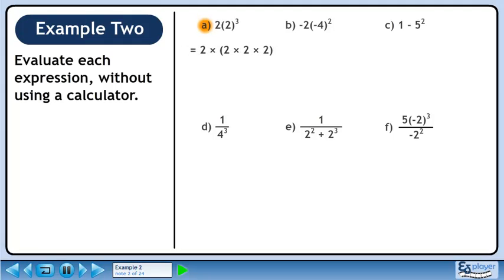Expand 2 cubed to get 2 times 2 times 2. 2 times 2 times 2 equals 8. Finally, 2 times 8 equals 16.